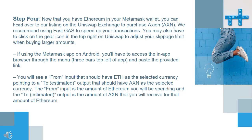Step 4: Now that you have Ethereum in your Metamask wallet, you can head over to our listing on the Uniswap exchange to purchase Axion. We recommend using FastGas to speed up your transactions. You may also have to click on the gear icon in the top right on Uniswap to adjust your slippage limit when buying larger amounts. If using the Metamask app on Android, you'll have to access the in-app browser through the menu — 3 bars, top left of the app — and paste the provided link. You will see a 'from' input with ETH as the selected currency, and an estimated output with AXN as the selected currency. The 'from' input is the amount of Ethereum you will be spending, and the estimated output is the amount of AXN you will receive.